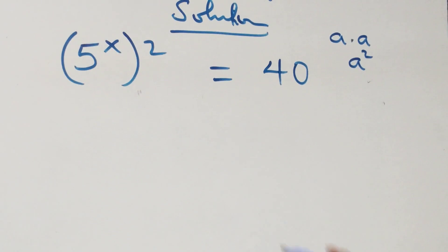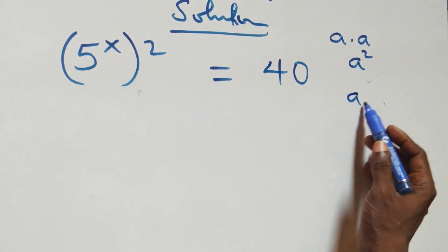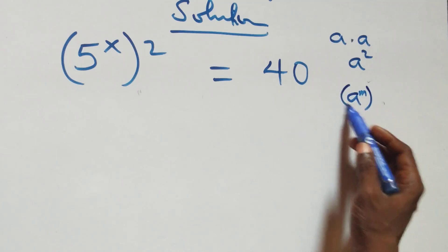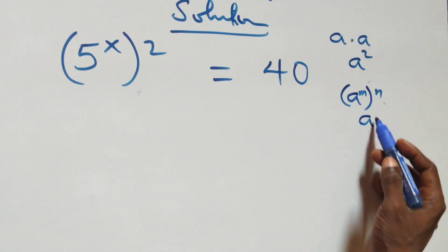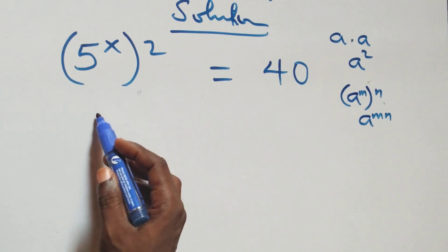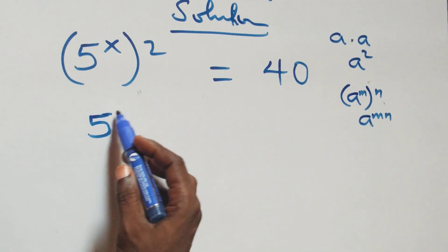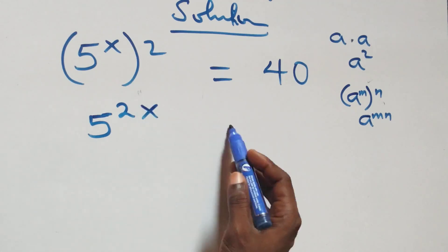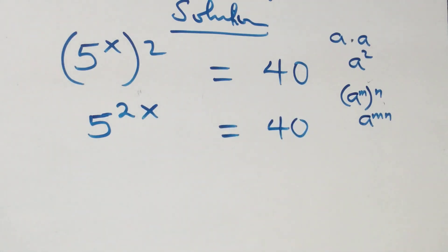The next step: this follows when we have a raised to power m, raised to power m. This is the same thing as a raised to power m times m — that is, the powers multiply — and we have 5 raised to power 2x equals 40.